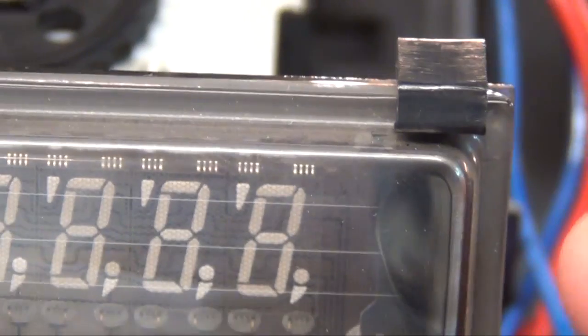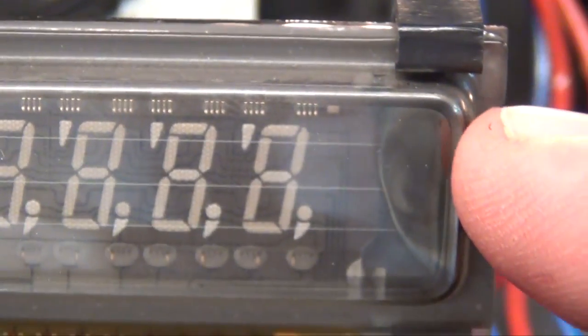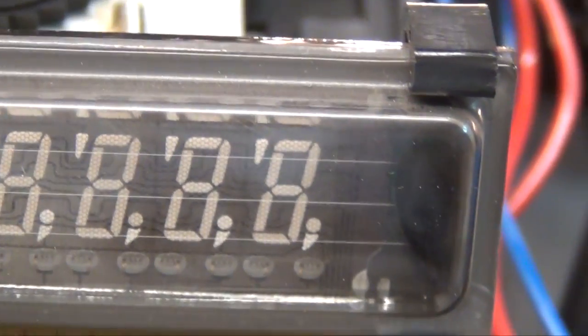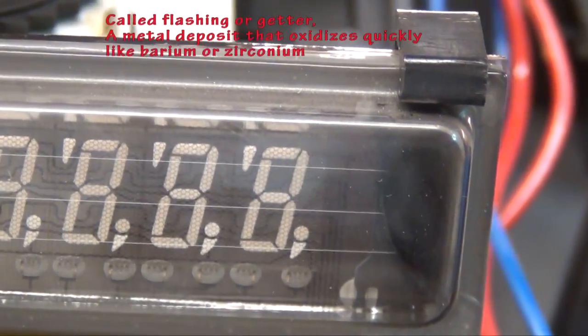And on the end here, you see a black spot like that. And you see that in vacuum tubes all the time. And you think, wow, that's burnt. That looks bad. Well, no, it's not.